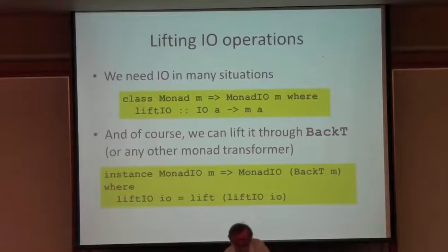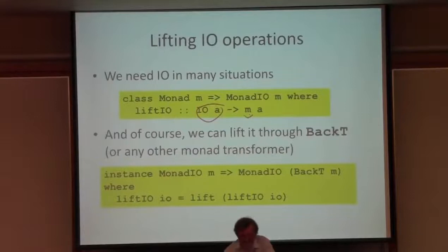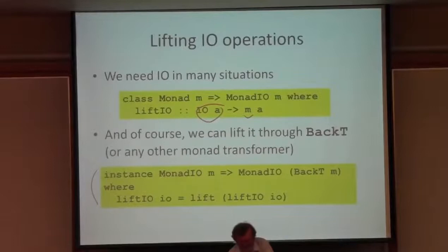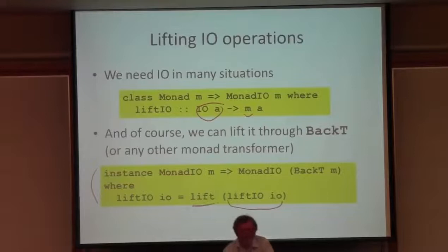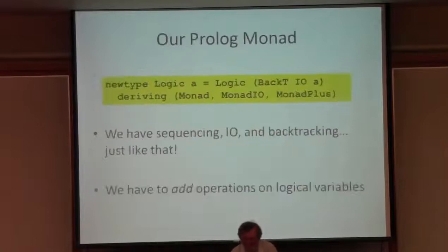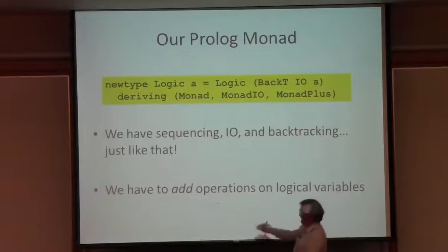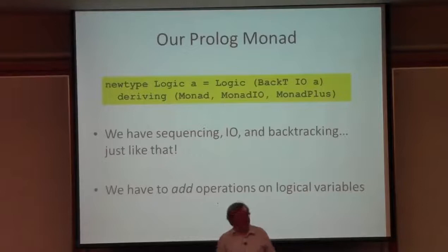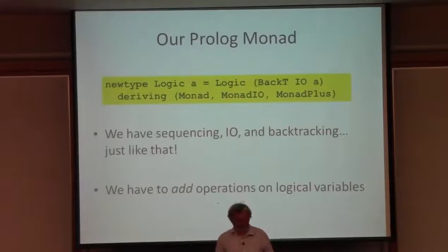Quite often IO is used as the base monad that we add things to, and whenever we do that we'd like to perform IO operations and lift them the correct number of times. It's handy to define a class just for doing that. There's a class MonadIO that says how to lift any IO operation into a new monad. Instances are already defined for any monad you care about — I just have to write one to explain how to lift IO operations into the backtracking monad. I just lift them into the monad M, and then lift them one more time using the backtracking monad transformer.